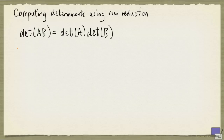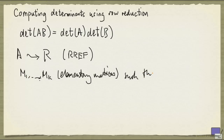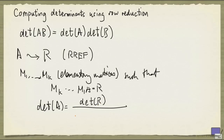The key is, when you row reduce A to R, where R is in reduced row echelon form, you can write down elementary matrices M1 up to Mk such that their product equals R. Since each of these elementary matrices is a square matrix, the determinant of A is given by the determinant of R divided by the product of the determinants of M1 up to Mk. All we need to know is how to compute determinants of elementary matrices, which is quite simple, and to compute the determinant of a matrix in reduced row echelon form.